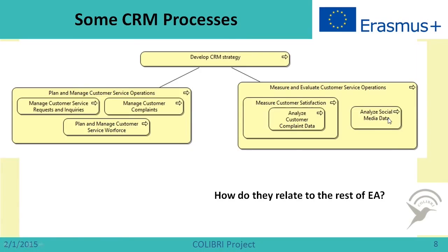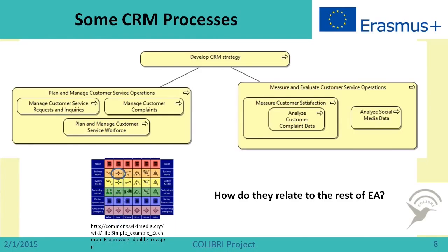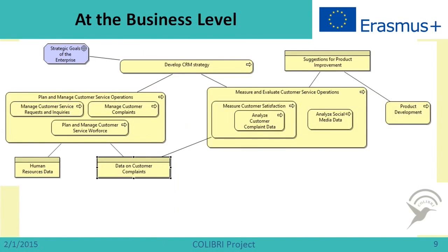These are all different things we do in enterprise customer relationship management. The question now is how these relate to other elements of enterprise architecture. For example, the process 'Develop Customer Relationship Strategy' will refer to strategic goals of the enterprise. The result of activities here will produce data objects like 'Suggestions for Product Improvement,' which can be used in other processes. Also, 'Plan and Measure Customer Service Operations' will need business objects like data about human resources and data about customer complaints.